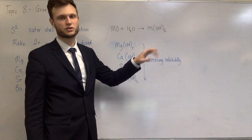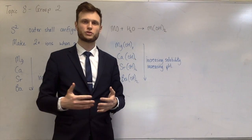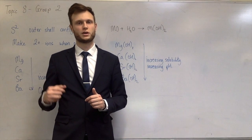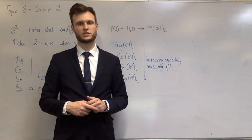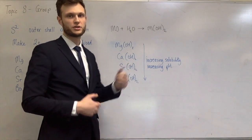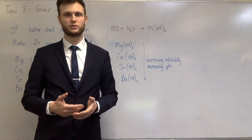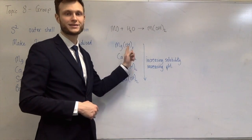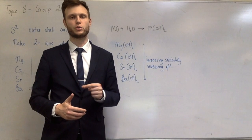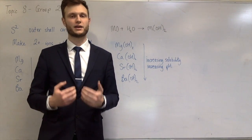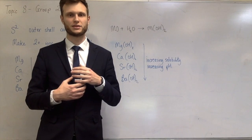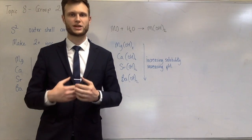There are also a couple of uses of group 2 metal compounds that you need to know. Calcium hydroxide is used to neutralize acidic soils, and magnesium hydroxide and calcium carbonate are both used as antacids — chemicals taken to neutralize excess stomach acid and treat indigestion.